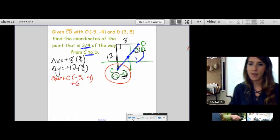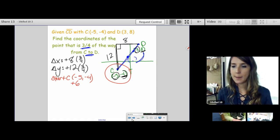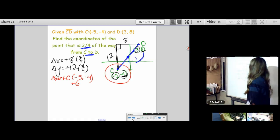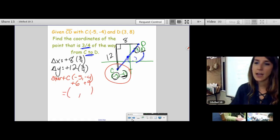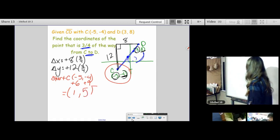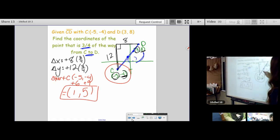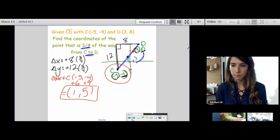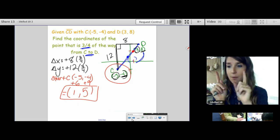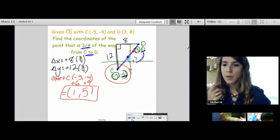I don't want to go up 12 and over 8 anymore. I want to go 3/4 of the way up and 3/4 of the way over. So we're going to find out what 3/4 of both of these are. It's going to be beautiful. 3/4 of the way from C to D. So what's my starting point? My starting point is C, which is (-5, -4).